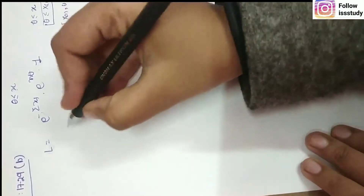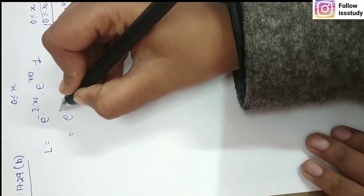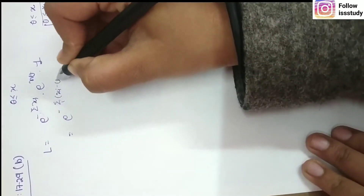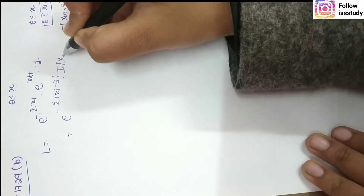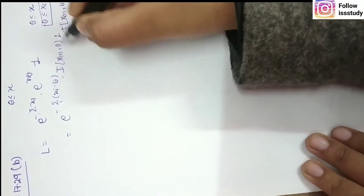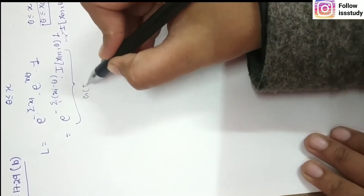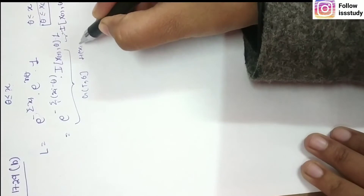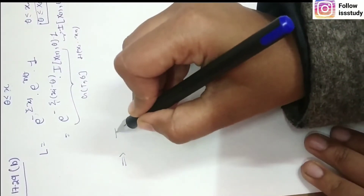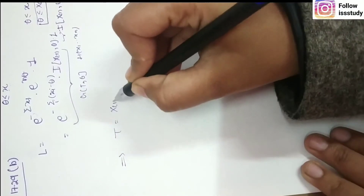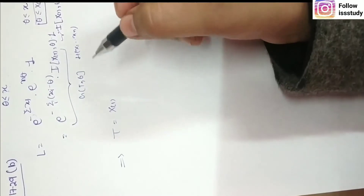Now we write the likelihood function incorporating the indicator function: L(theta) = e^(-Σxi) · e^(nθ) · I(X(1), theta). We split this into two parts: the first part is g(T, theta) = e^(nθ) · I(X(1), theta), and the second part is h(X1, X2, ..., Xn) = e^(-Σxi). By the Neyman factorization theorem, T = X(1) is the sufficient estimator for the population parameter theta.